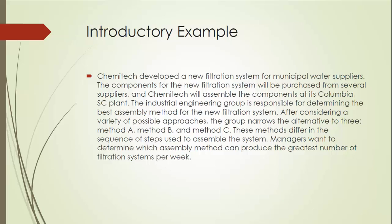Let's look at our introductory example. Chemitech developed a new filtration system for municipal water suppliers. The components for the new filtration system will be purchased from several suppliers, and Chemitech will assemble the components at its Columbia, South Carolina plant. The industrial engineering group is responsible for determining the best assembly method. After considering a variety of possible approaches, the group narrows the alternatives to three: method A, B, and C. These methods differ in the sequence of steps used to assemble the system. Managers want to determine which assembly method can produce the greatest number of filtration systems per week.